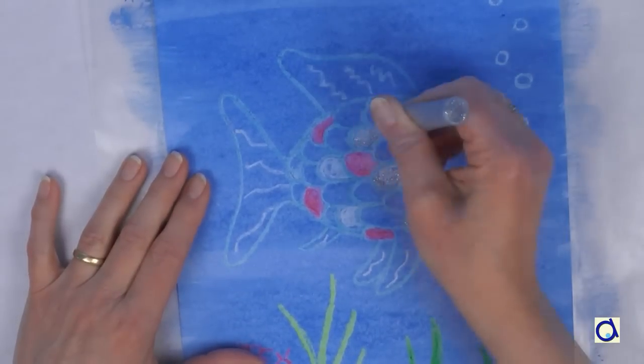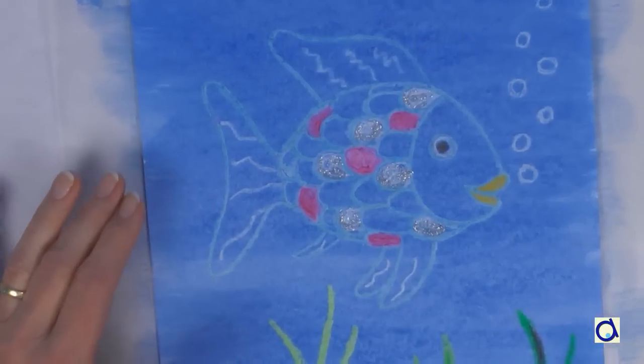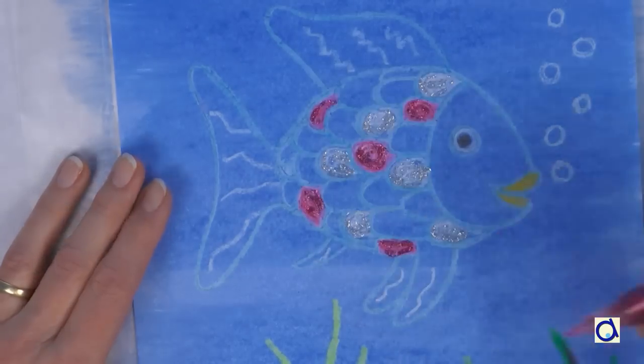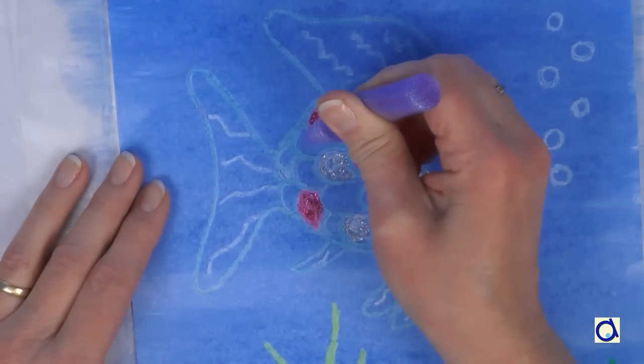In the story, the rainbow fish is covered with shiny scales of many colours. To represent the shimmering, you can colour the scales using glitter glue pencils.